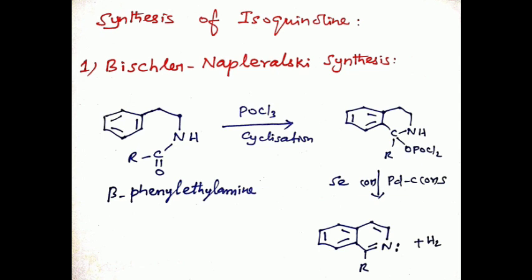Cyclodehydration occurs to give 3,4-dihydroisoquinoline. After that, 3,4-dihydroisoquinoline is reduced with palladium with carbon or sulfur or selenium, that is dehydrogenation, to form 1-alkyl isoquinoline with loss of hydrogen. Here R is an alkyl, aryl, or aralkyl group.